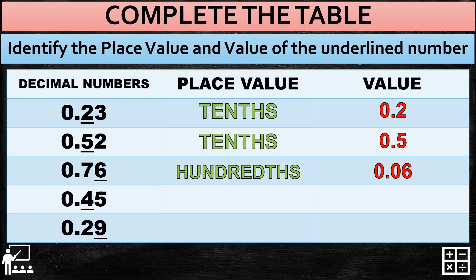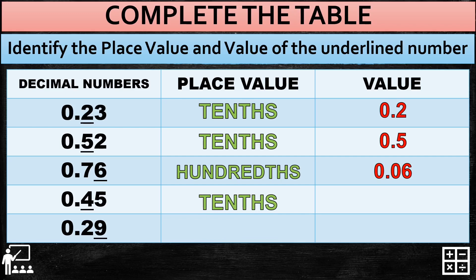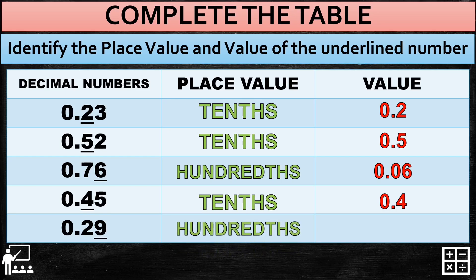For 0.45, the place value is tenths and the value is 0.4. Next and last, for 0.29, the underlined number 9 is in the hundredths place. The value of the hundredths is always two decimal places, so the answer is 0.09.